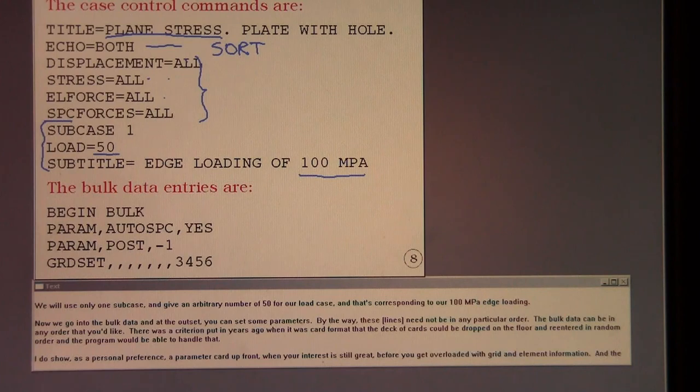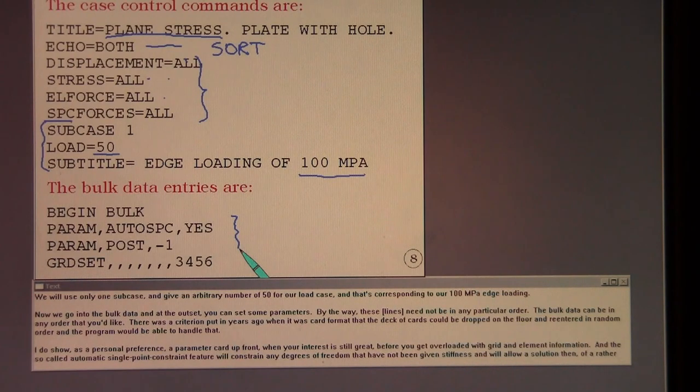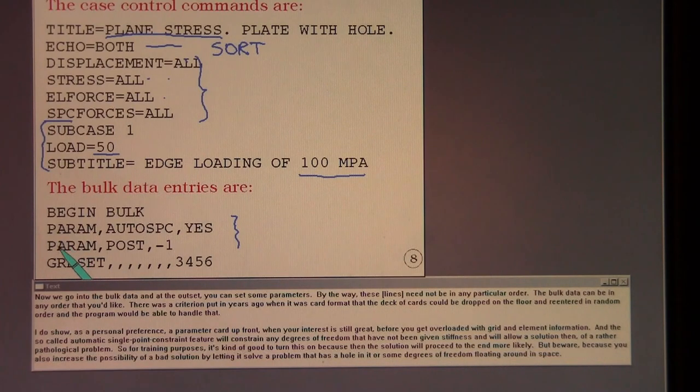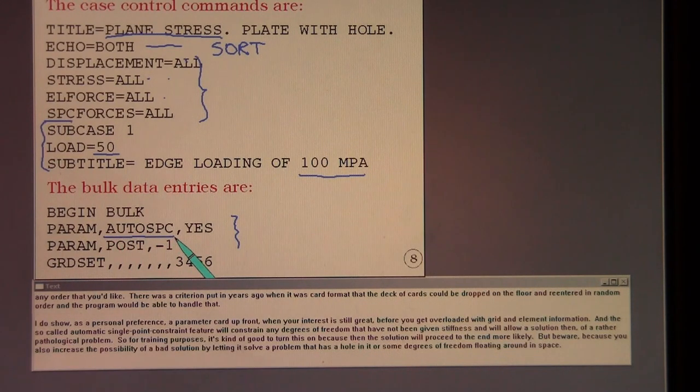Now we go into the bulk data, and at the outset you can set some parameters. By the way, these need not be in any particular order. The bulk data can be in any order that you like. There was a criterion put in years ago when it was card format that the deck of cards could be dropped on the floor and re-entered in random order, and the program would be able to handle that. I do show, as a personal preference, the parameter cards up front when your interest is still great before you get overloaded with grid and element information.